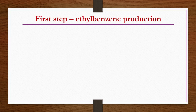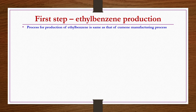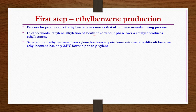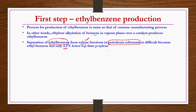The process for production of ethylbenzene is similar to the cumene manufacturing process. Ethylene alkylation of benzene in vapor phase over catalyst produces ethylbenzene. Separation of ethylbenzene from xylene fractions in petroleum reformate is difficult because ethylbenzene has only a 2.1°C lower boiling point than para-xylene, making separation impractical. Therefore, the alkylation of benzene process is preferred to get ethylbenzene.